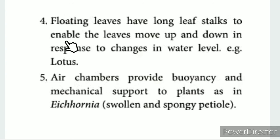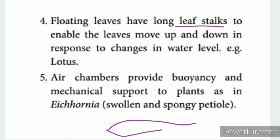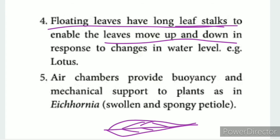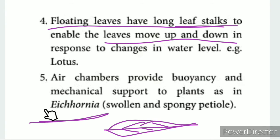Floating leaves have long leaf stalks to enable the leaves to move up and down in response to changes in water level. An example of this is the lotus. Air chambers provide buoyancy and mechanical support to plants, as in Eichornia.